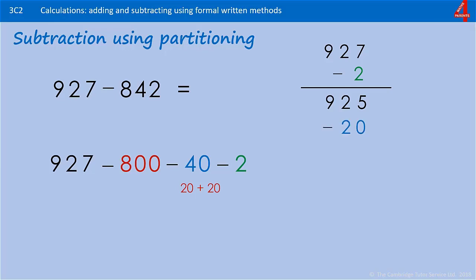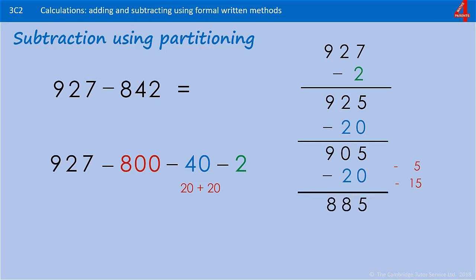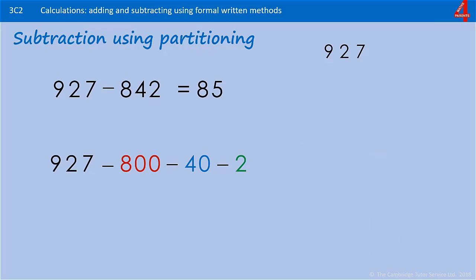...leaves 905. You now have another 20 to take away. For those who find this kind of thinking difficult, you can even break that 20 down into a 5 and a 15 if you prefer. You'll get to 885. Take away the 800, and that leaves 85.